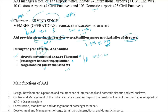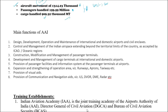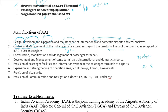Key functions of AAI include design, development, operation, and maintenance of international, domestic airports, and civilian enclaves. Another key function is control and management of Indian airspace through ATC and electronic equipment, extending beyond territorial limits - including areas like the Arabian Sea and Bay of Bengal.